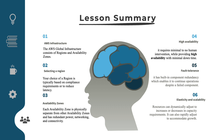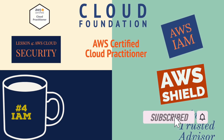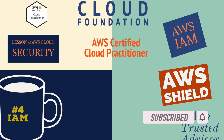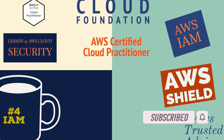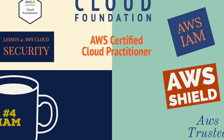The AWS global infrastructure has several valuable features. First, it is elastic and scalable. Second, it is fault tolerant. Finally, it requires minimal to no human intervention while providing highly available and scalable services. Leave a comment below if you find this content useful, and don't forget to claim your exam voucher by commenting and subscribing. Thank you, and see you in the next one.